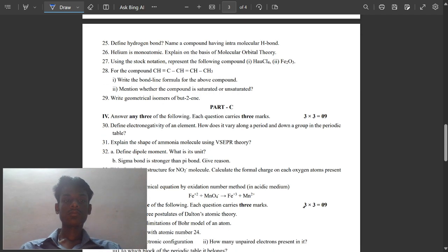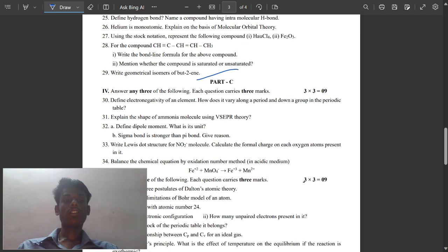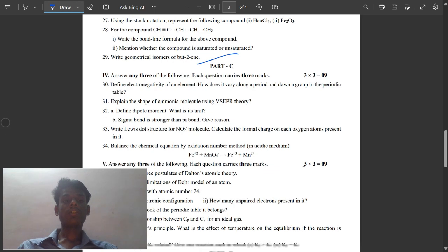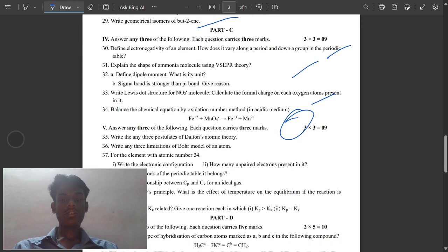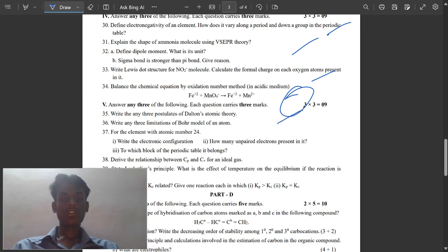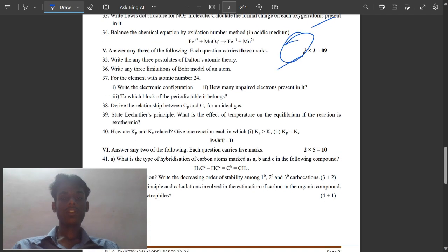Read the geometrical isomers of butene. We know that define electronegativity of an electron. This is an easy question. This is also easy question. Easy acidic medium, three postulates of Dalton's atomic theory that the matter can't be destroyed. It depicts so easy. This is also so easy, so easy guys.